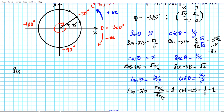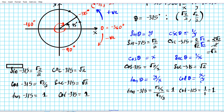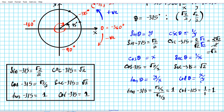Let's organize our answers in a nice list. Sine of -315° = √2/2. Cosecant of -315° = √2. Cosine of -315° = √2/2. Secant of -315° = √2. Tangent of -315° = 1. Cotangent of -315° = 1. Those are the six trig functions for θ = -315° using the unit circle from memory.